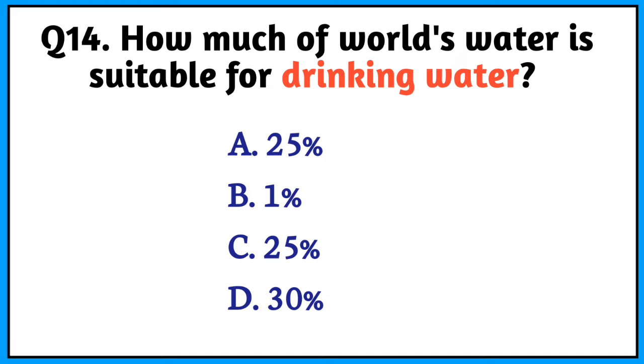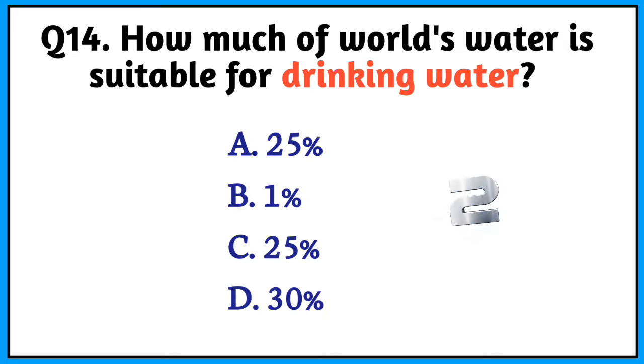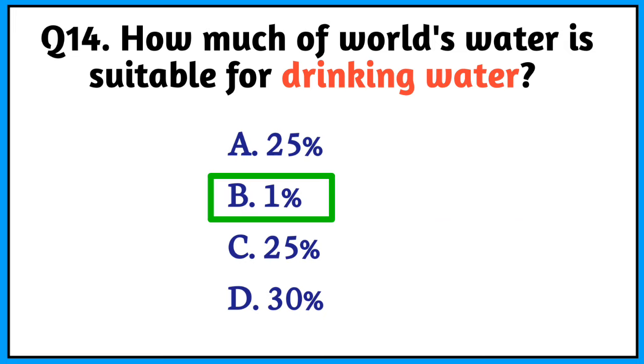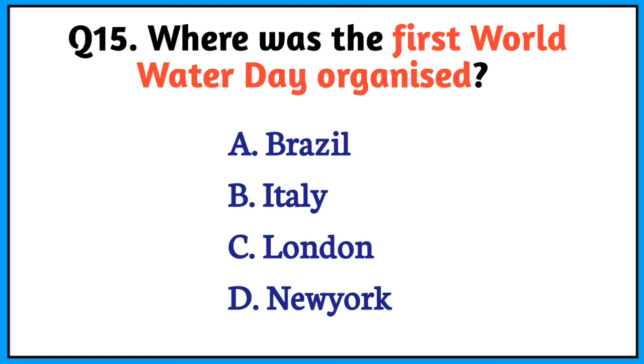Question number 14. How much of the world's water is suitable for drinking? The right answer is option B. 1%.